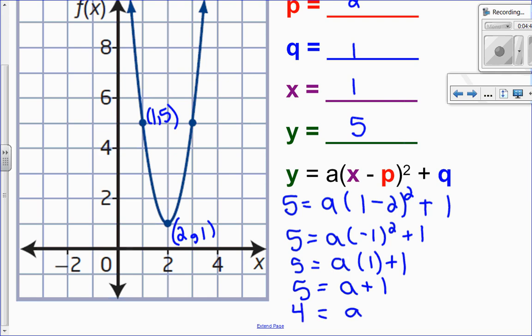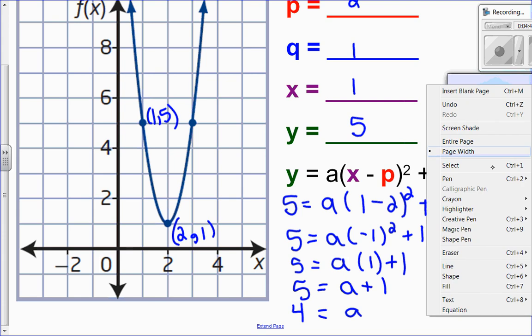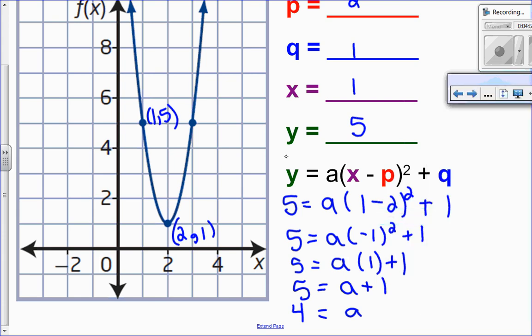So now that I know P, Q, and A, I can put that all together in the format here to figure out my equation. So Y equals A, which is 4, times X minus P, which is 2, squared plus Q, which is 1. So this is my equation, keeping X and Y in general.